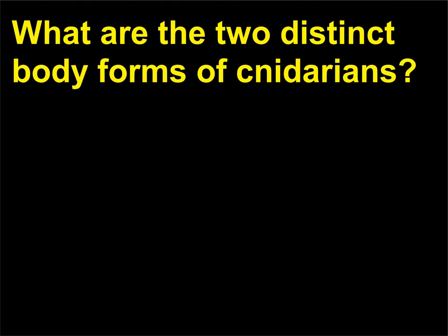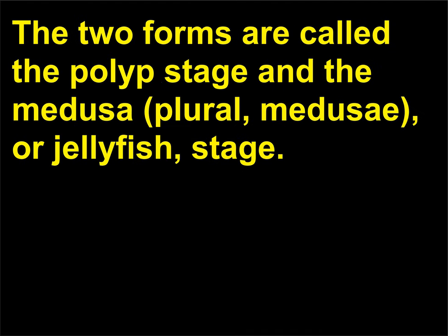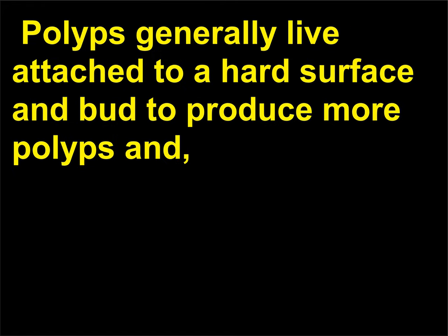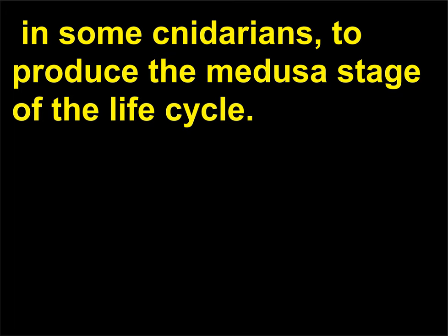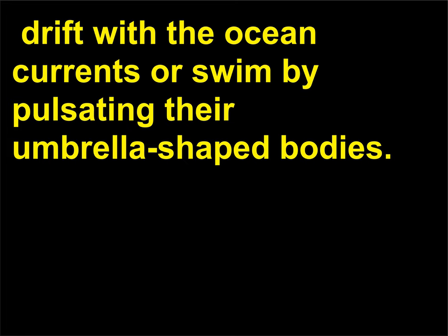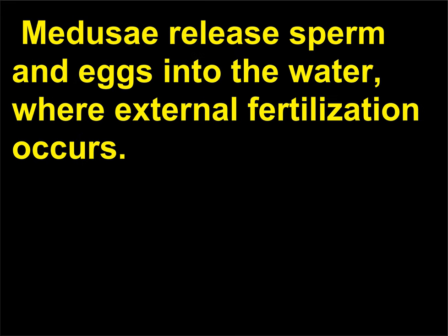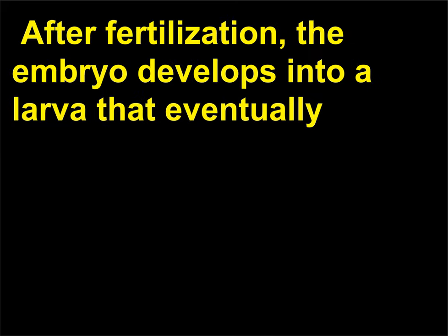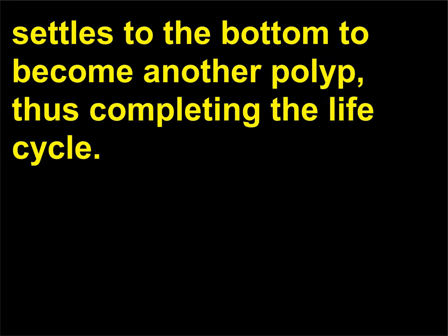What are the two distinct body forms of cnidarians? The two forms are called the polyp stage and the medusa (plural medusae), or jellyfish, stage. Polyps generally live attached to a hard surface and bud to produce more polyps and, in some cnidarians, to produce the medusa stage of the life cycle. These medusae drift with ocean currents or swim by pulsating their umbrella-shaped bodies. Medusae release sperm and eggs into the water, where external fertilization occurs. After fertilization, the embryo develops into a larva that eventually settles to the bottom to become another polyp, completing the life cycle.